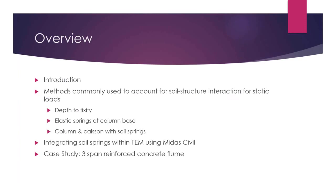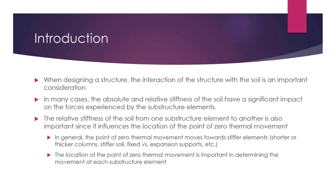We'll start off with an overview. First, we'll be looking at an introduction — what this topic is about and why we're discussing it. Then I'll discuss three methods commonly used to account for soil structure interaction for static loads: depth of fixity, elastic springs at the column base, and including column and caisson with soil springs within the finite element model. I'll go into more detail about integrating soil springs using Midas Civil, and then jump into a case study, which will be a three-span reinforced concrete flume.